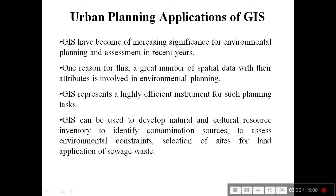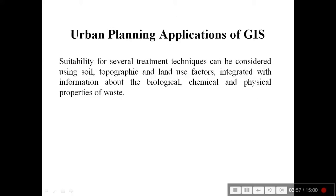GIS can be used to develop natural and cultural resource inventory — an important aspect which is currently an area of research — to identify contamination sources and to assess environmental constraints or blockages. Selection of sites for land application of sewage waste is another aspect. Waste management is one of the aspects of urban planning. Suitability for several treatment techniques can be considered using soil, topographic and land use factors, integrated with information about the biological, chemical and physical properties of the waste.